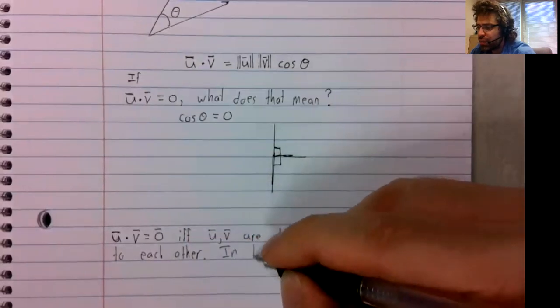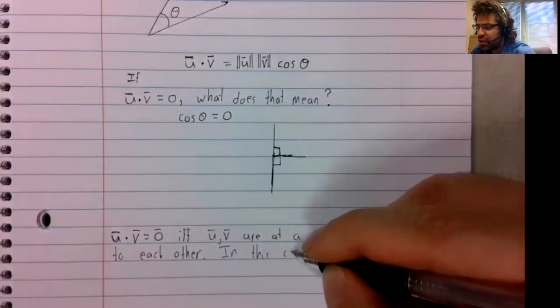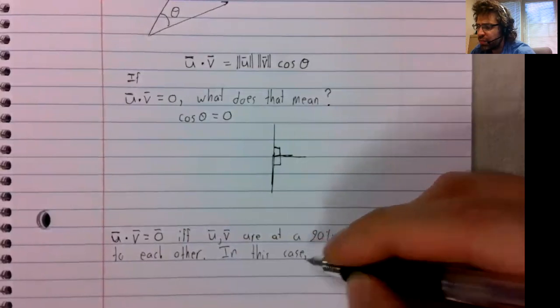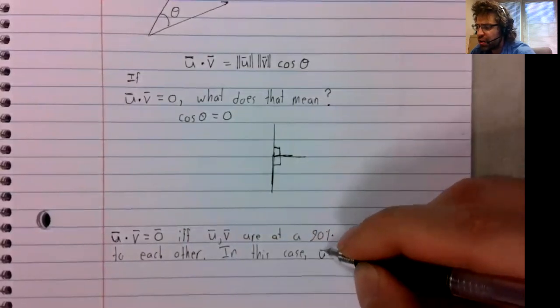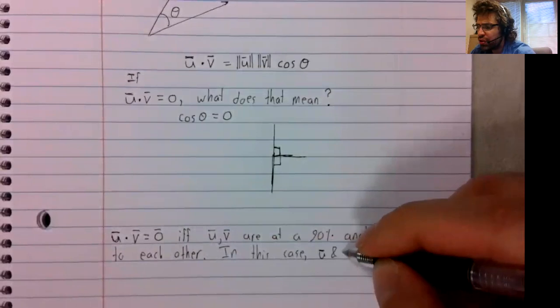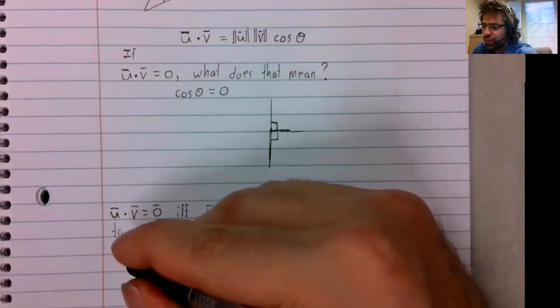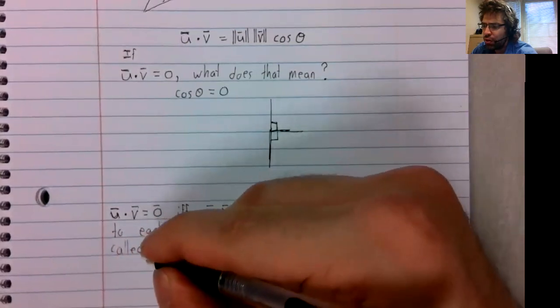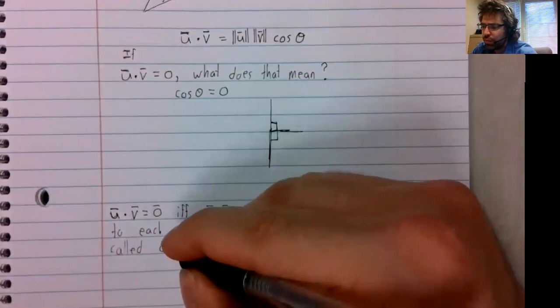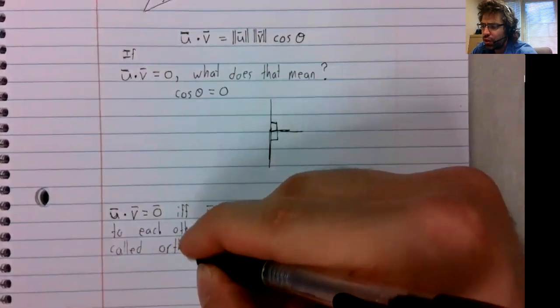In this case, the vectors u and v are called orthogonal.